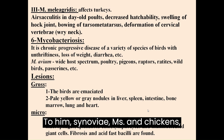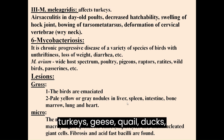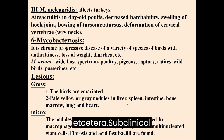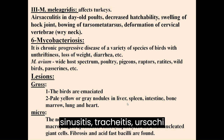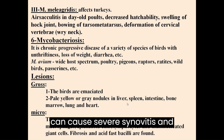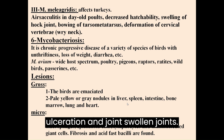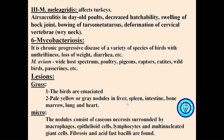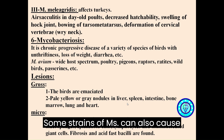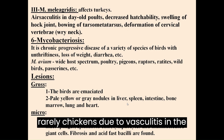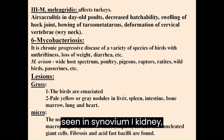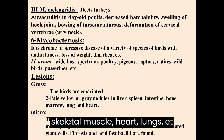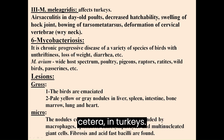M. synoviae (MS) affects chickens, turkeys, geese, quail, ducks, etc. Causes subclinical infection of respiratory disease: sinusitis, tracheitis, airsacculitis, conjunctivitis. Can also cause severe synovitis and ulceration in joints with swollen joints. Some strains of MS can cause neurological signs in turkeys and rarely chickens due to vasculitis in the brain, or disseminated vasculitis seen in synovium, eye, kidney, skeletal muscle, heart and lungs in turkeys.